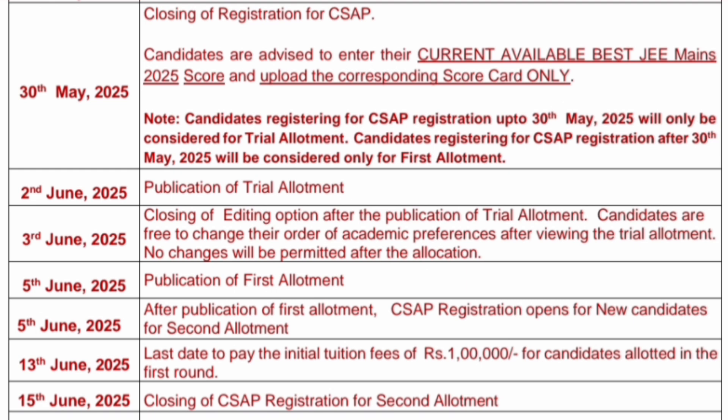If you are registering by 30th May, then only you are eligible for the trial allotment. If you are registering after 30th May, then you will only be considered for the first allotment. So yes, you can also register after 30th May, but then you go directly to the first allotment.